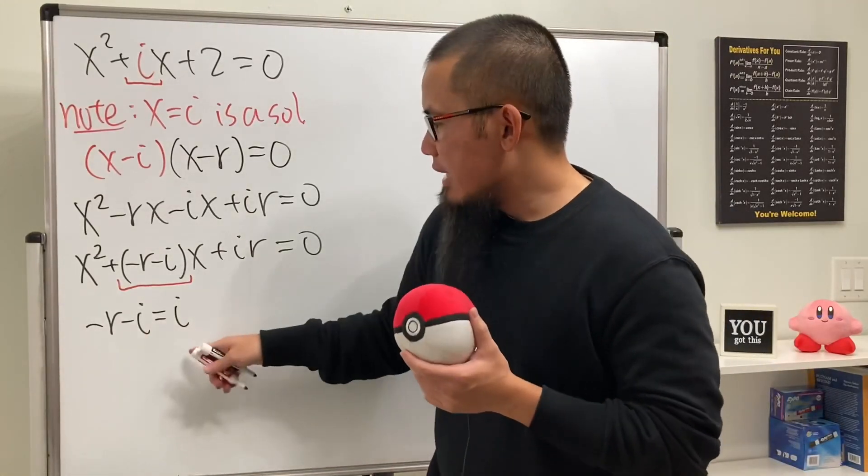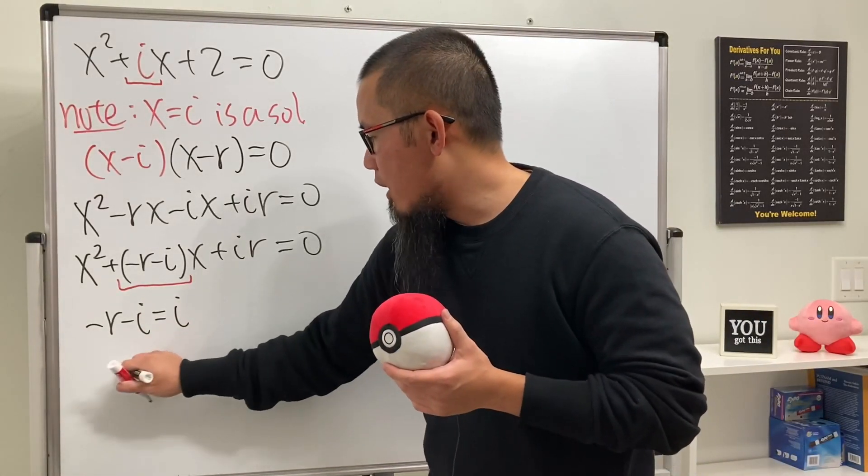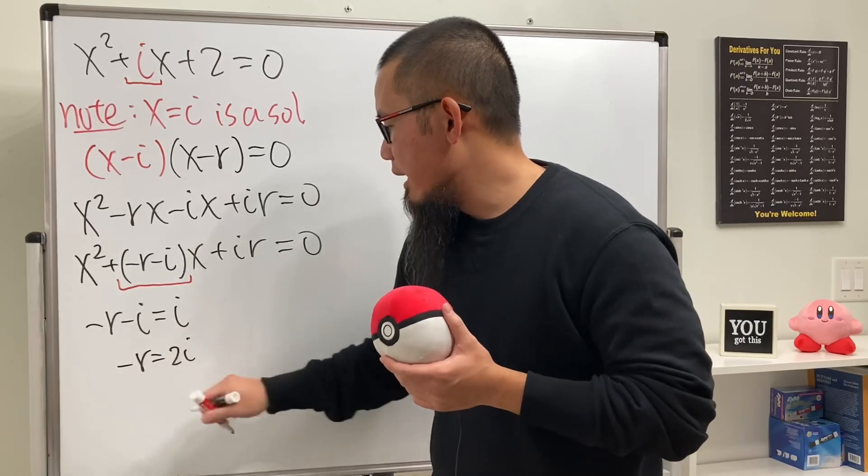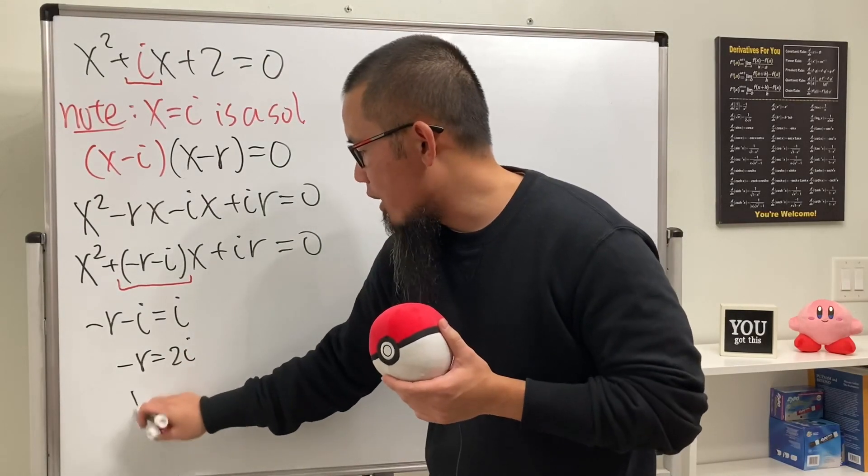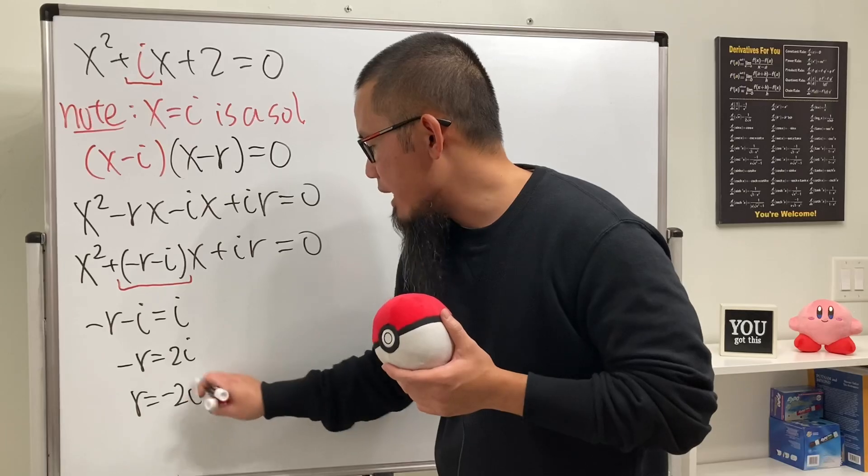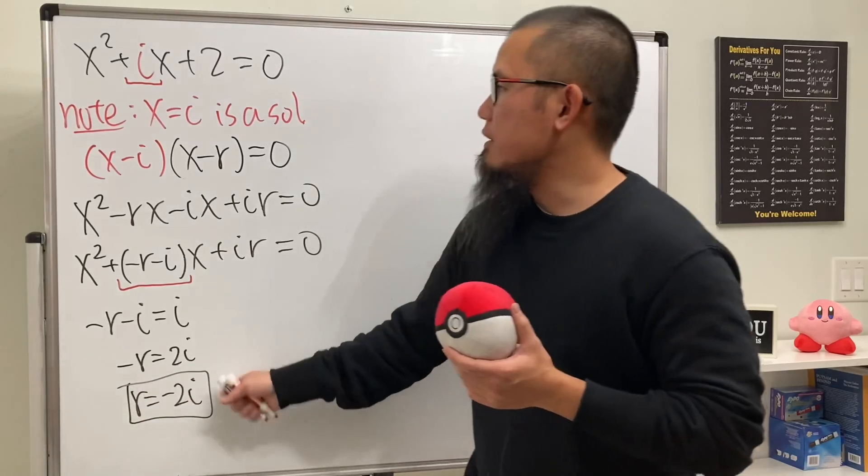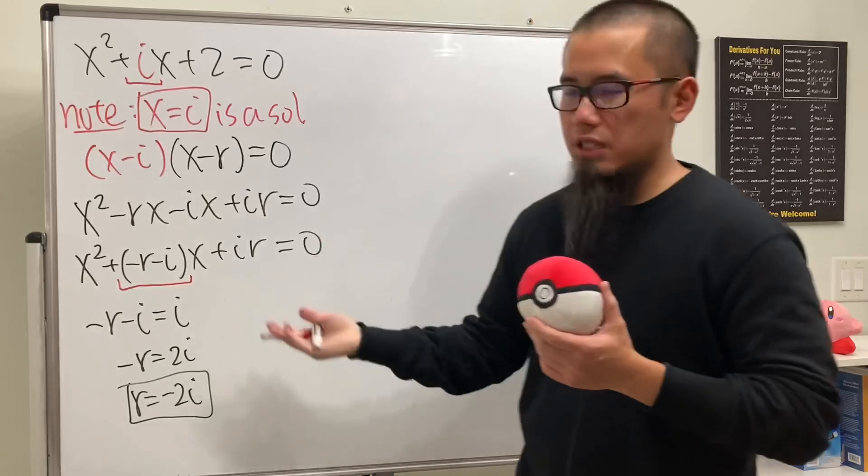Then divide both sides by negative 1, we get r equals negative 2i. So as we can see, we have the two solutions already. And then we are done.